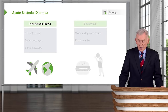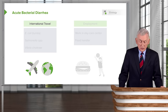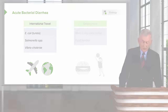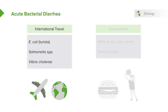As for the causes of acute bacterial diarrhea with international travel, we're talking about E. coli — the cause of turista. Some people call it Montezuma's revenge, some call it the green apple quick step. There are many names for it. One of my colleagues says, travel broadens the mind and loosens the bowels.